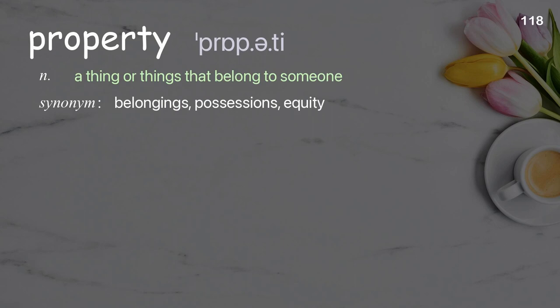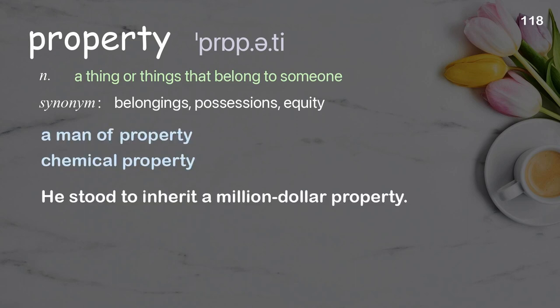Property: a thing or things that belonged to someone. Examples: a man of property; chemical property. He stood to inherit a million-dollar property.